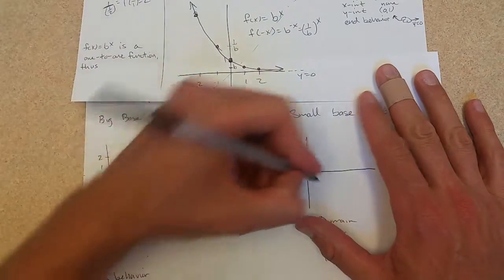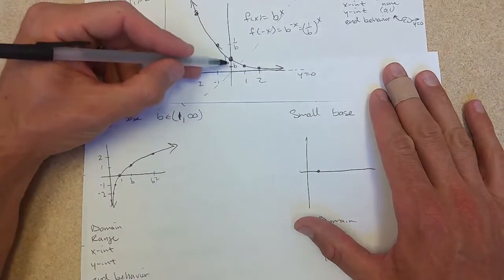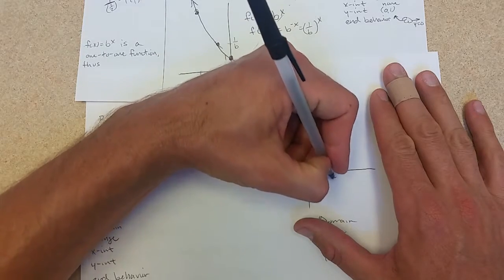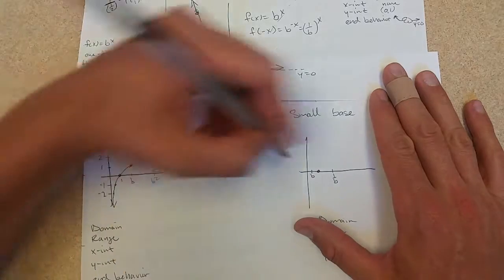So zero, one becomes a one, zero, and now e is small, e right there, one over b out there.